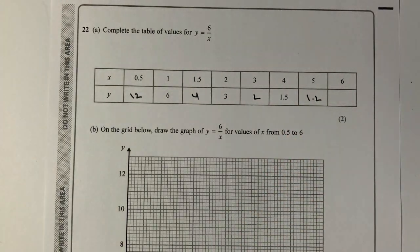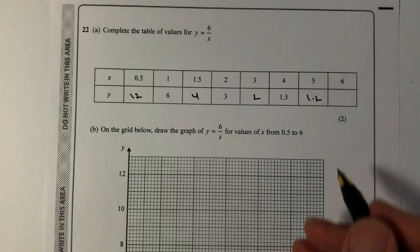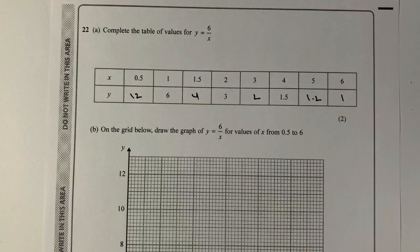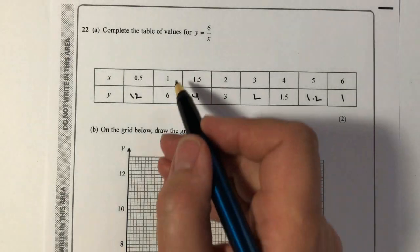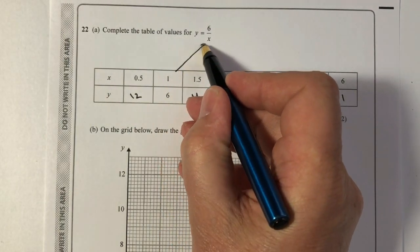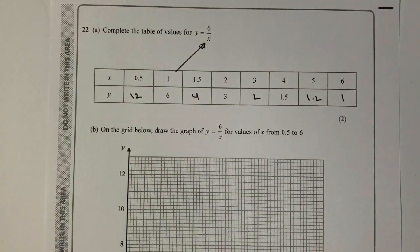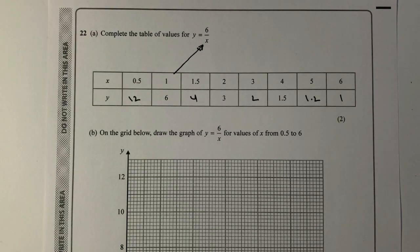6 divided by 3 is going to be 2, and then we've got 6 divided by 5, which is going to be 1.2. And then 6 divided by 6, finally, is going to be 1. So hopefully you can see that all I'm doing is I'm taking these values of x, and I'm putting them straight into that part of the formula.